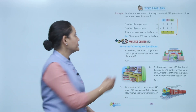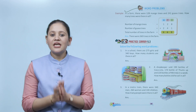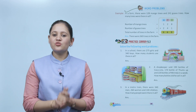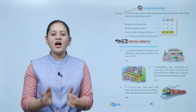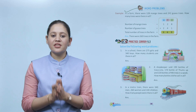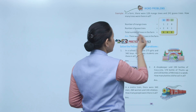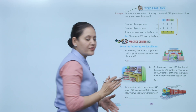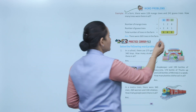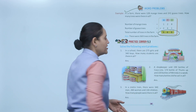Word problems: In a farm there are 128 mango trees and 241 guava trees. How many trees are there in all? We add 128 and 241. Total trees are 369.